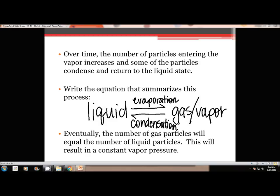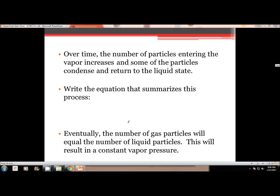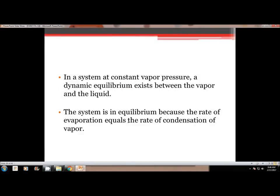Eventually the number of gas particles will equal the number of liquid particles, and we say that this will result in a constant vapor pressure, meaning that this is a circular motion. So it will continue to change back and forth and continue and continue and continue. It doesn't stop the process. It just stops to our eyes of what we see. That's what equilibrium is. In a system at constant vapor pressure, a dynamic equilibrium exists between the vapor and the liquid. And so we say that it's in equilibrium because the rate of evaporation is equal to the rate of the condensation. The rates are equal to each other. So then when they're equal to each other, to us, we don't see anything, but it's still actually happening quite a bit. That's something that's just hard to think about.